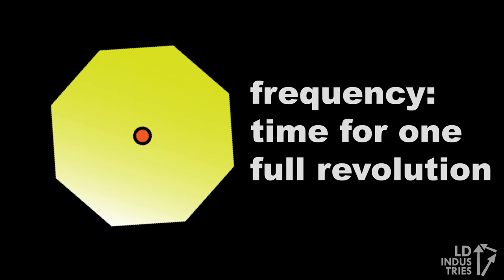But how can a spinning mirror be a stopwatch? The trick is that the frequency of the spinning mirror, or how long it takes to make one full revolution, can be adjusted.